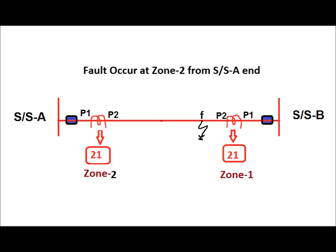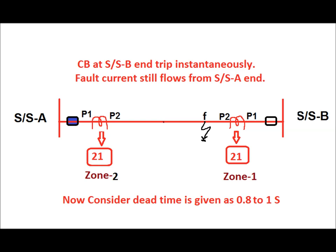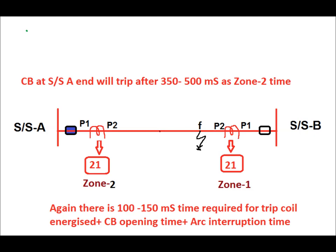Now consider a fault at Zone 2 location from substation A end, which is simultaneously at Zone 1 location from substation B end. Since the fault is in Zone 1 from substation B, the relay at B trips instantaneously without any time delay. At substation A end, the relay waits 350 to 500 milliseconds before sending a trip signal, plus another 100 to 150 milliseconds for trip coil energization, CB opening time, and arc interruption time — so approximately 500 milliseconds total to clear the fault from substation A end.